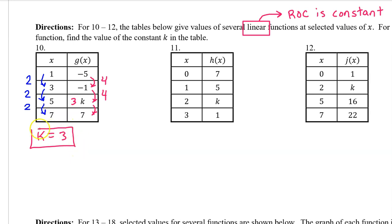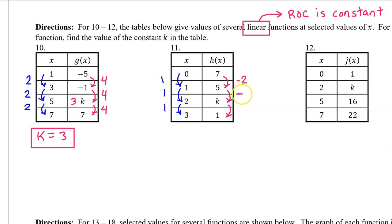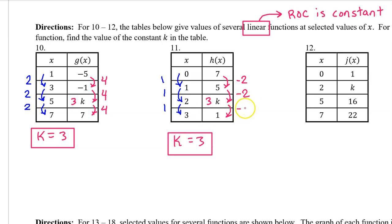Let's continue the process to check: the next output value change is also 4, taking us from 3 to 7 — so we know this is right. For number 11, here are the input value changes and the one output value change we know. Since h of x is linear, the rate of change should be constant, so the next change in output is also negative 2. A change of negative 2 takes us from 5 to 3, so k equals 3. Checking: another change of negative 2 takes us from 3 to 1 — correct.